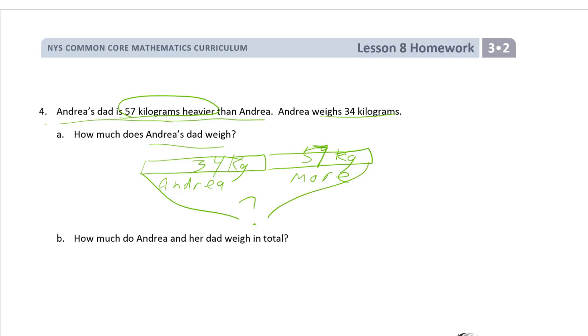So we can see here that what we have to find out is how much is it, the two of them together? 34 plus 57. 34, 57. You can do this vertically. You might be able to do it mentally even easier. 7 and 4 is 11, got a bundle of 10. And then we have 5 and 3, that's 8. One more is 9. 91. Andrea's dad weighs 91 kg.